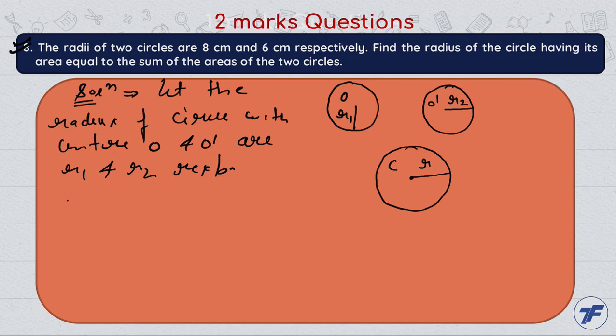r1 here we have 8 centimeter and r2 equal to 6 centimeter. Now apply the condition: area of the third circle.